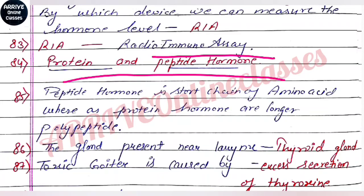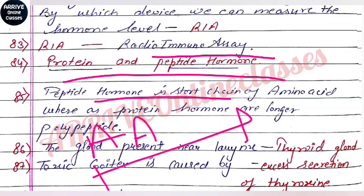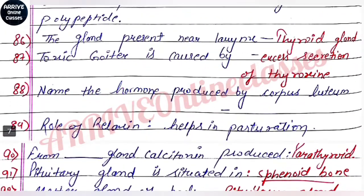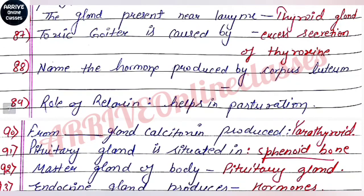Protein and peptide hormones: a peptide hormone is a short chain of amino acids. If the chain is long, it is called a protein hormone. A short chain of amino acids is a peptide hormone, while a long polypeptide chain is a protein hormone.